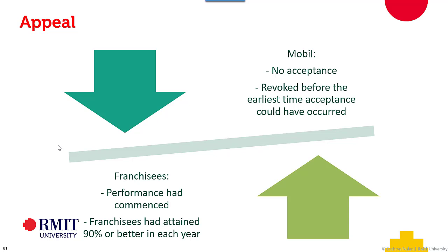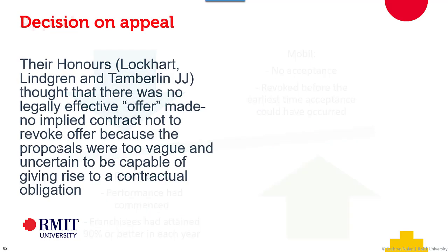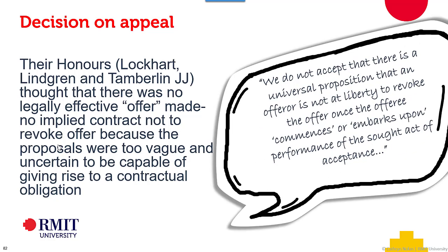On appeal, Mobil argued it was a matter of law. The High Court — justices Lockhart, Lindgren, and Tamberlan — found there was no legally effective offer made, no implied contract not to revoke, because the proposals were too vague and uncertain to give rise to a contractual obligation. The High Court called out Justice Wilcox, setting out the rules on unilateral offers.